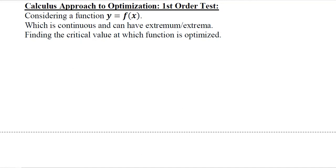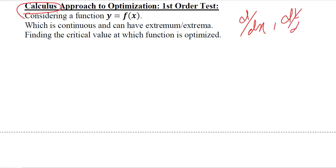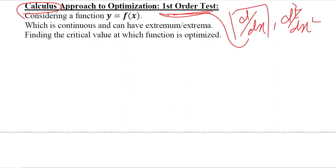After understanding the concept of optimization, we can now understand the very first approach of optimization, which is by using calculus. In calculus we have derivatives, and we will be using two of them. The first condition is based on the first order derivative, so it is called the first order test or first order condition. We should start with a given function, take its derivative, and develop the conditions of the tests.